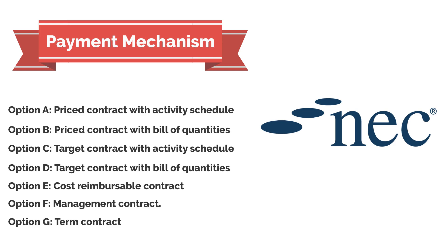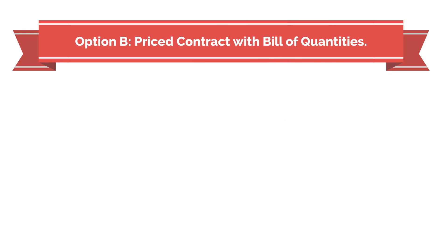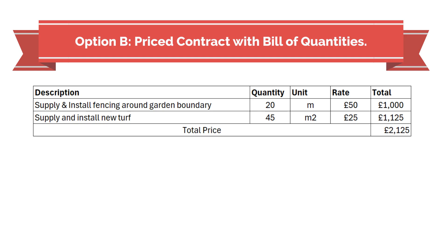In this video we're going to delve deeper into Option B, price contract with bill of quantities. As the name suggests, under this option the contract includes a priced bill of quantities. Each item on the bill has a corresponding rate which forms part of the overall price.